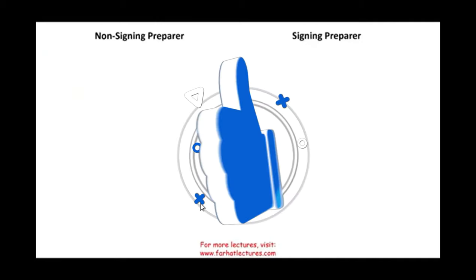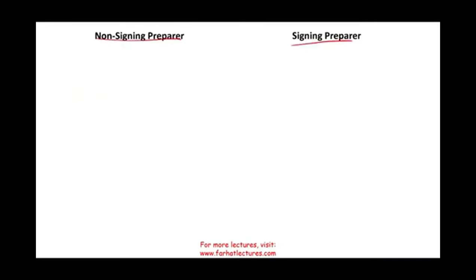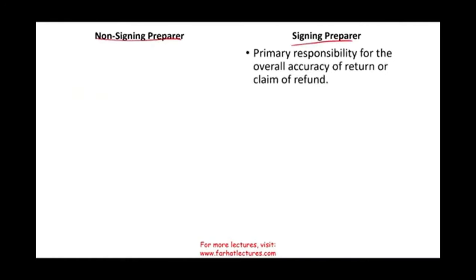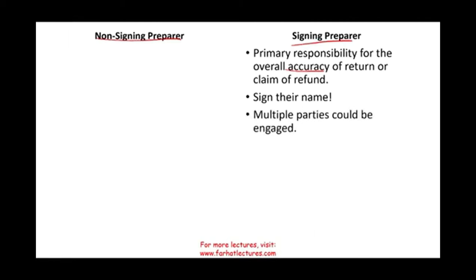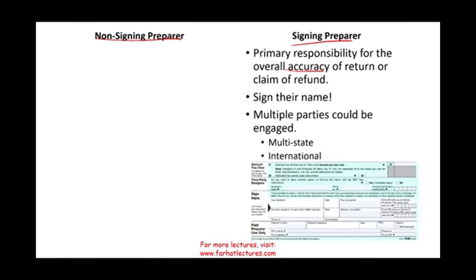Tax preparers are separated into signing and non-signing preparers. The signing preparer is the primary person responsible for the overall accuracy of the return or claim of refund — they sign their name on the return. For large or complex returns with multiple parties engaged, such as multi-state or international returns, the person whose name and signature appear on the return is the signing preparer.